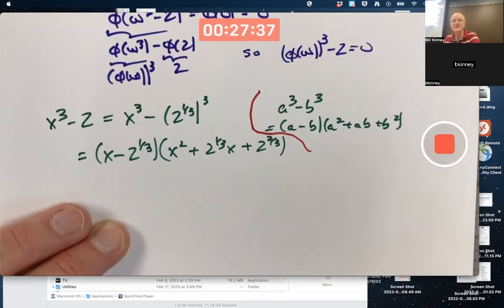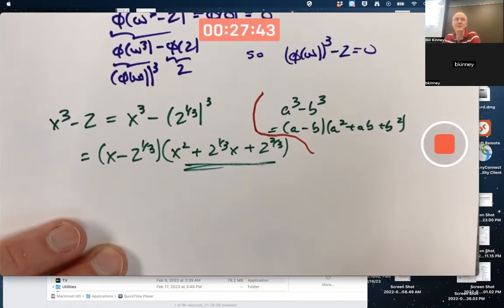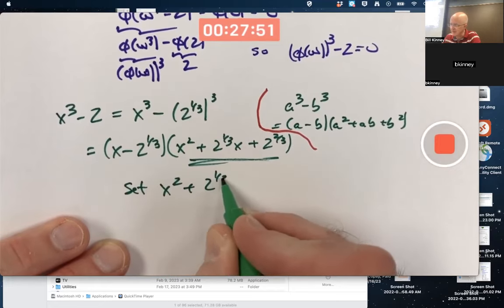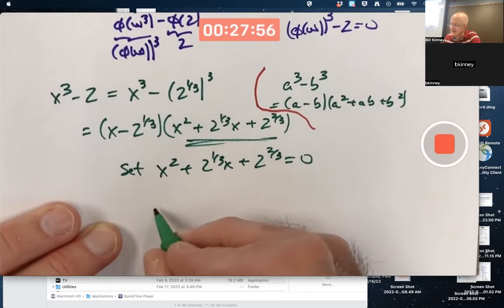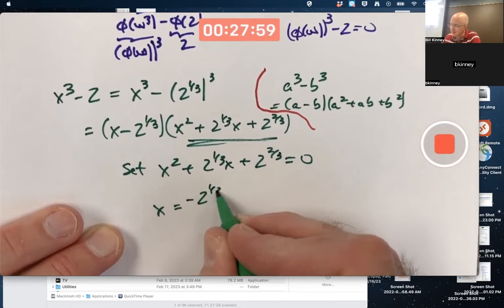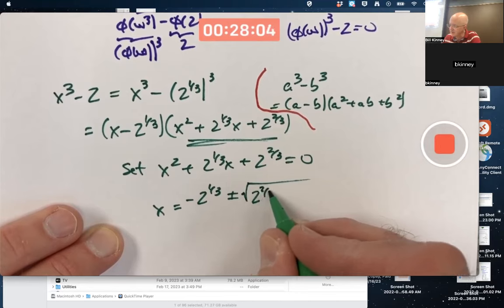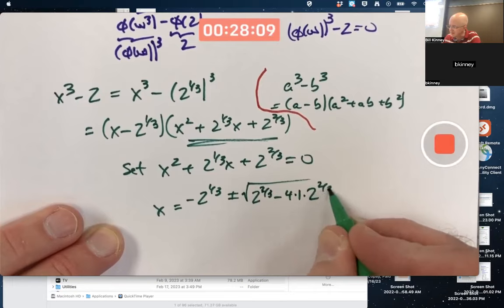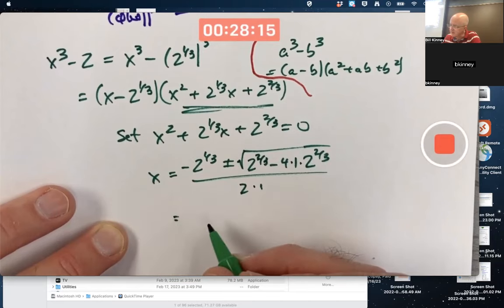So the other roots of x cubed minus 2 are going to be roots of this thing, a quadratic. I can use the quadratic formula. Set that thing equal to 0. This is not a typical use of the quadratic formula, but it's certainly still valid. Negative 2 to the 1/3 plus or minus square root of 2 to the 2/3 minus 4 times 1 times 2 to the 2/3 over 2.